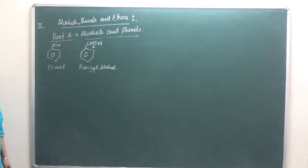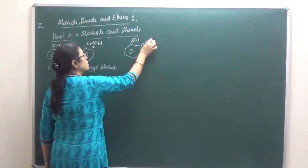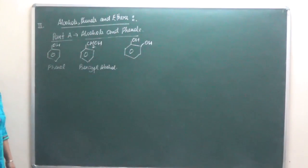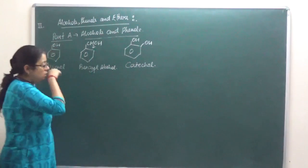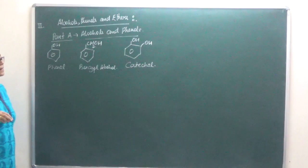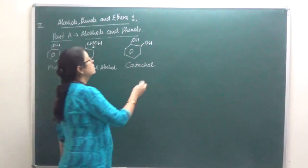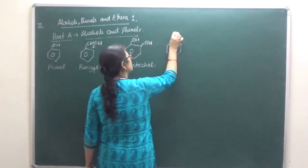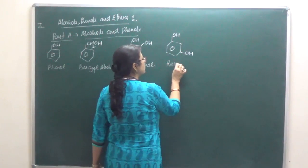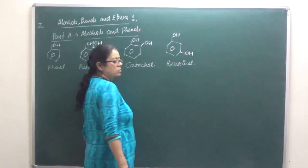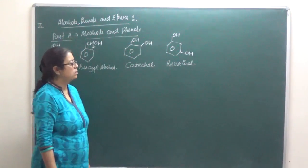If we have two OH groups present at the adjacent position, ortho position, then this is known as catechol. IUPAC name is 1,2-benzene diol. If these OH groups are present at the meta position, then this is known as resorcinol, 1,3-benzene diol.